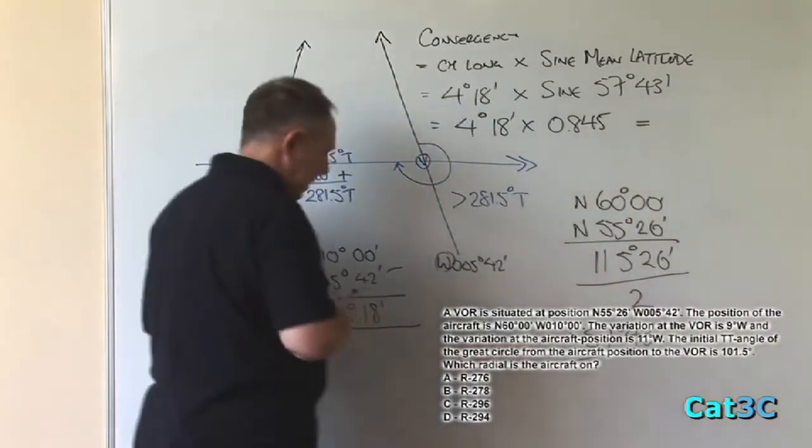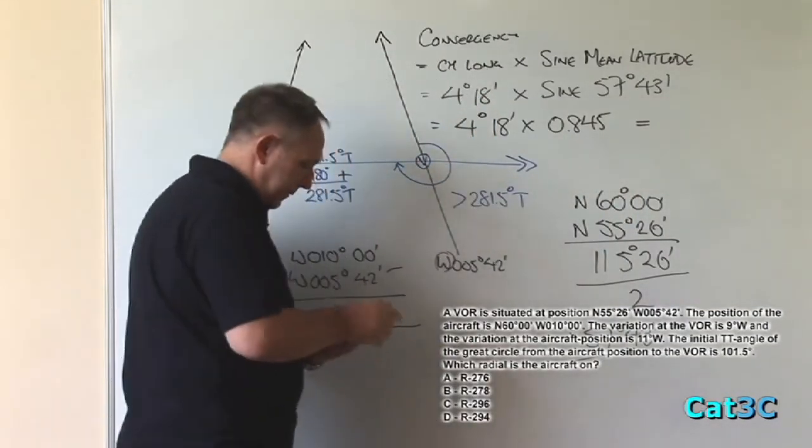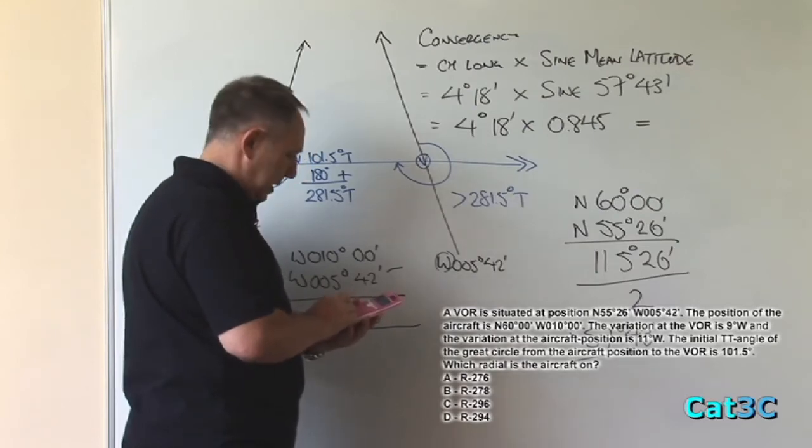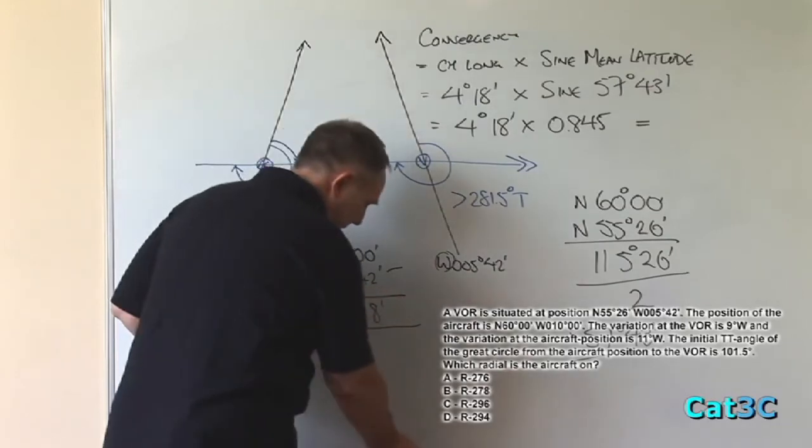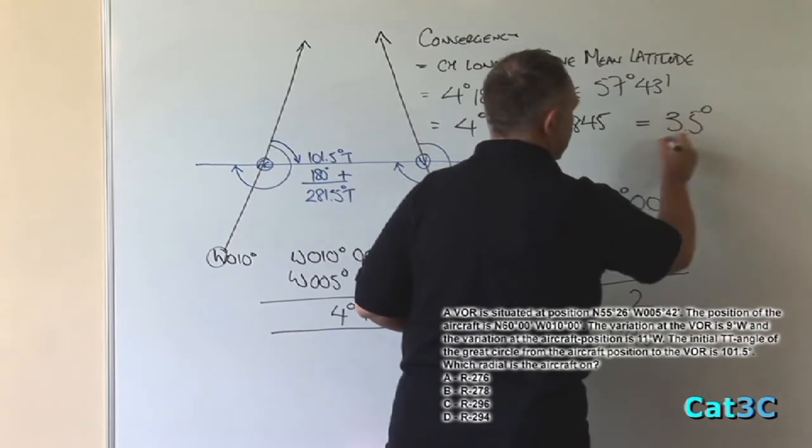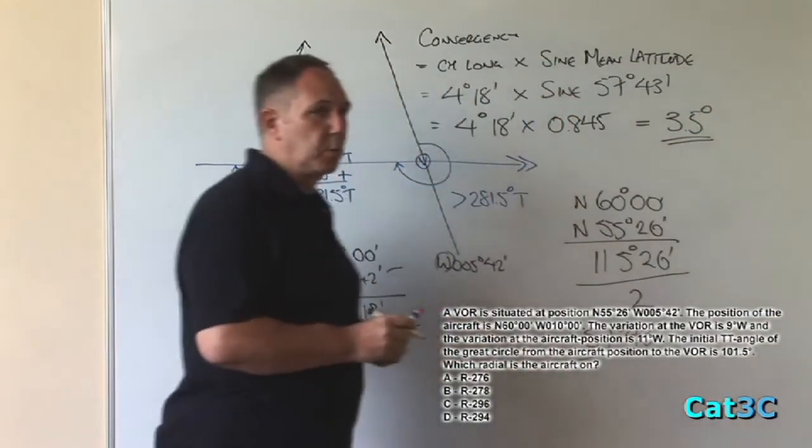And the final answer, 0.845 multiplied by 4 DMS 18 DMS equals just under three and a half degrees. We call it 3.5 degrees.